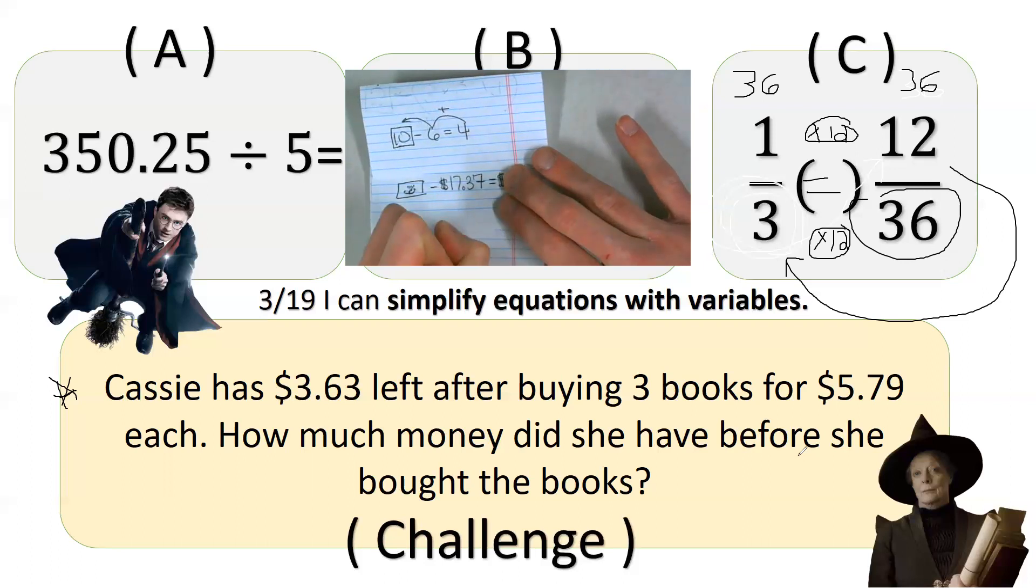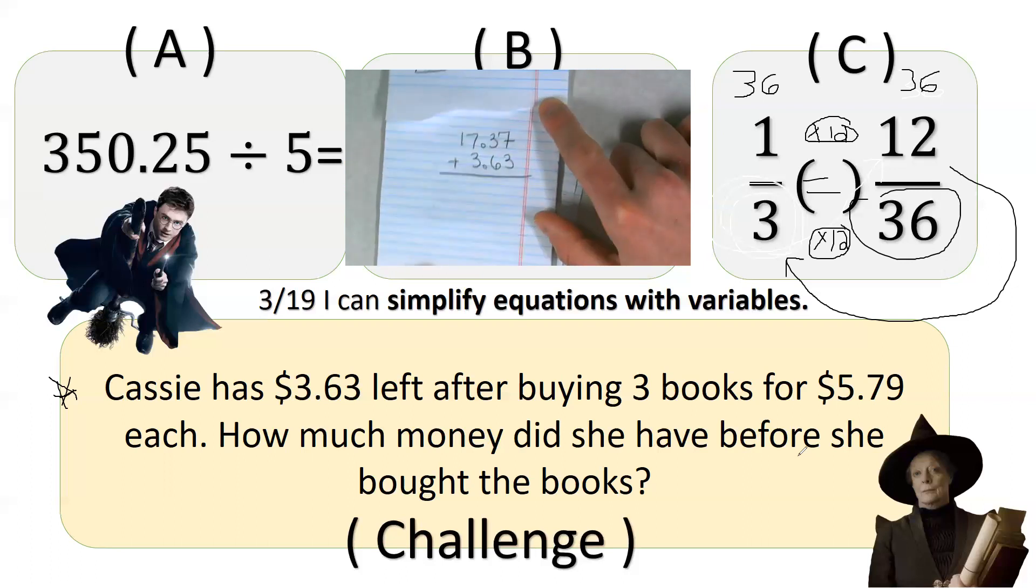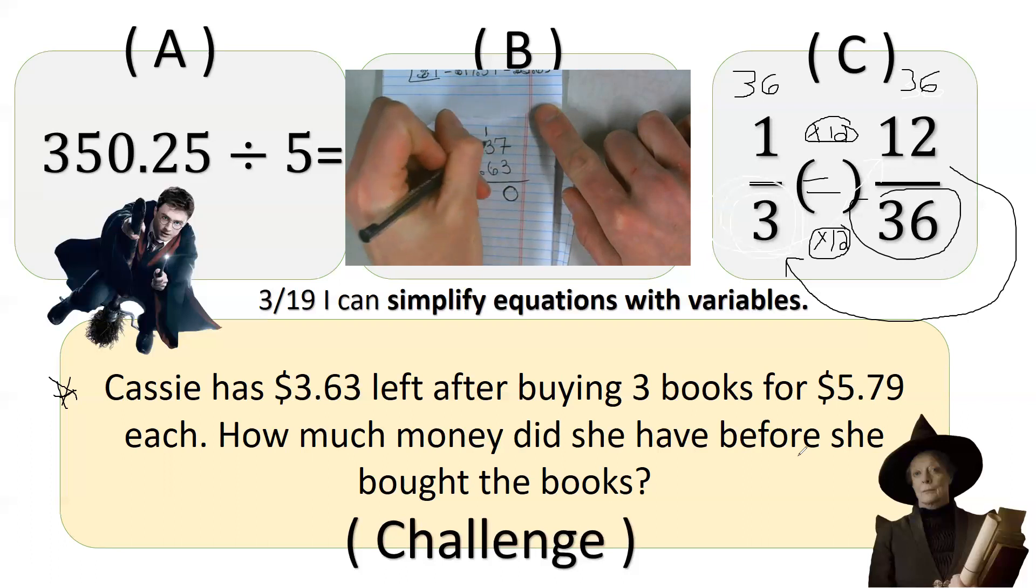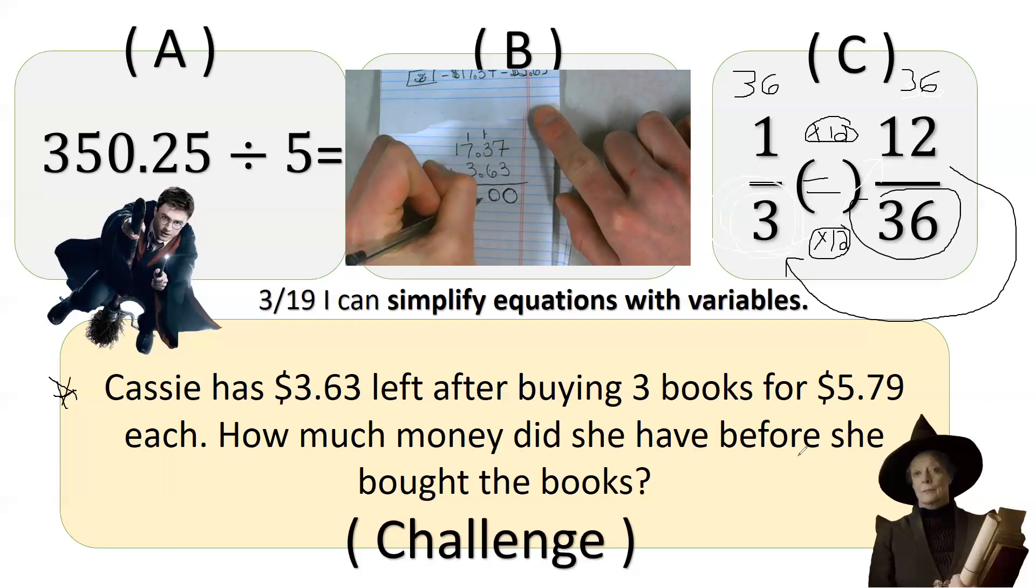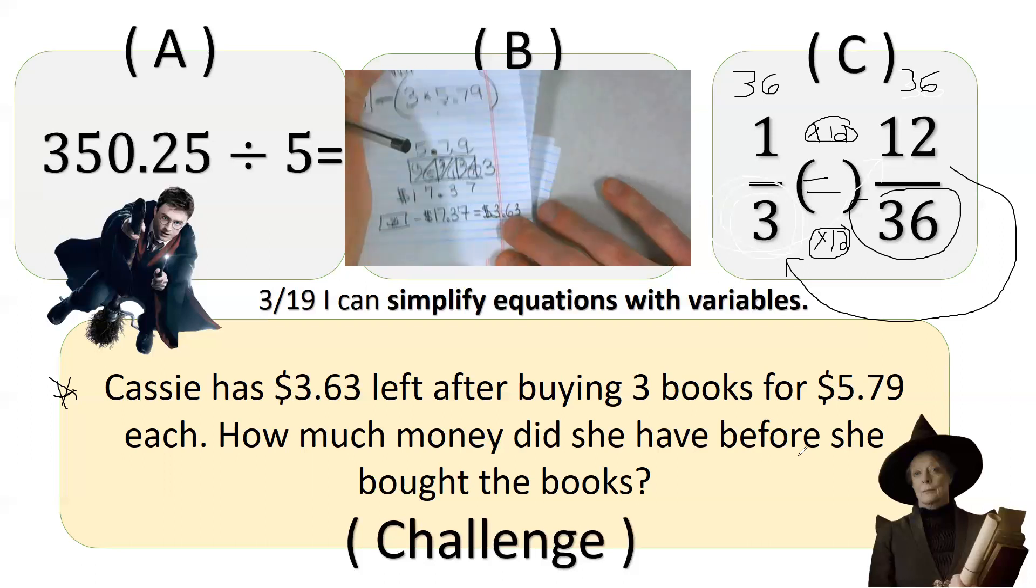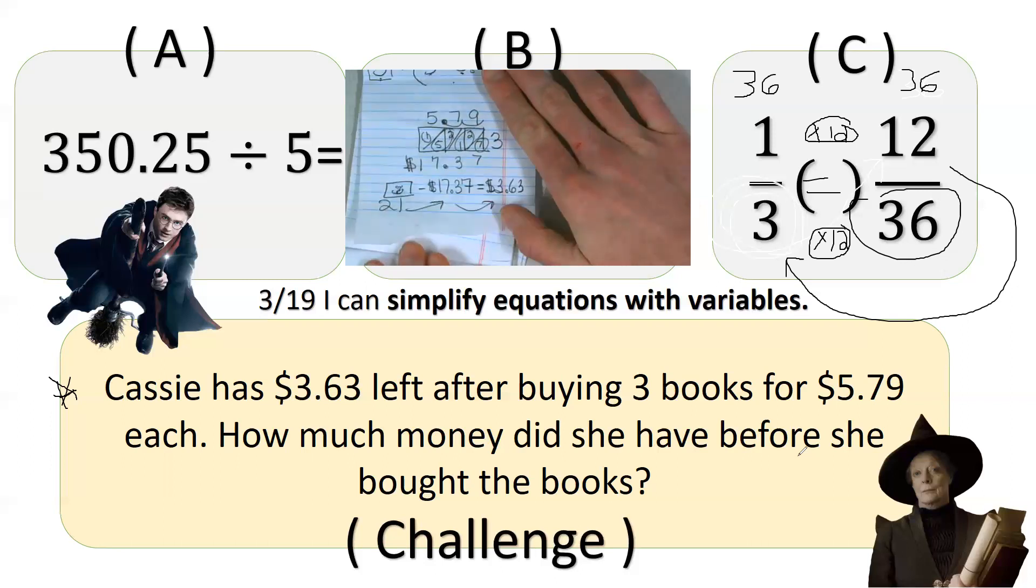So, in my fake problem, you add. So, that means that's what I'm going to do in my real problem. Add. So, 17.37 plus 3.63. 7 plus 3 is 10. 6, 7, 8, 9, 10. 7, 8, 9, 10, 11. 1 plus 1 is 2. So, how much money did she start out with? $21. Does that make sense? Yeah, that makes sense that she had $21. 21 minus 17.37 equals $3.63. So, how much money did she have before she bought her books? $21.